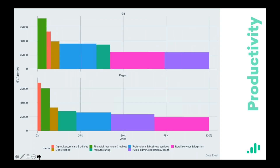Moving on to productivity — a completely different picture. What we've done here is take a region on the bottom chart and Great Britain as a whole, and aggregated all industries into seven large groupings: agriculture, mining and utilities; financial, insurance and real estate; manufacturing; and so on. We've measured each one by GVA per job as a measure of productivity, and the width of each bar represents the percentage of jobs that industry accounts for. The region shown actually has its highest productivity in agriculture, mining and utilities, which sets it apart from the GB picture where the highest productivity is in financial, insurance and real estate.